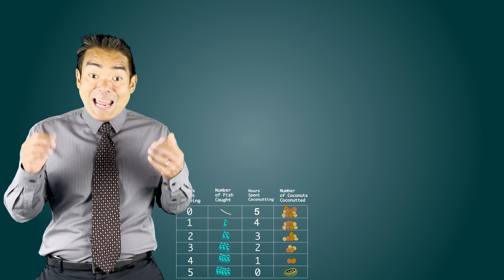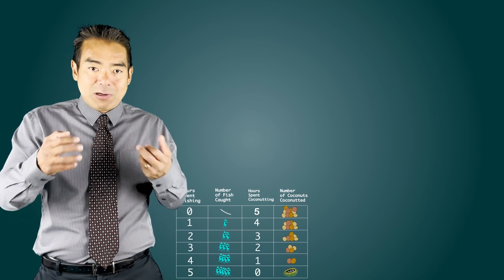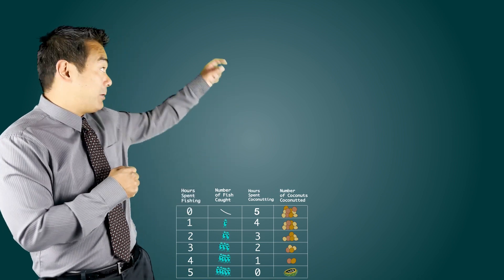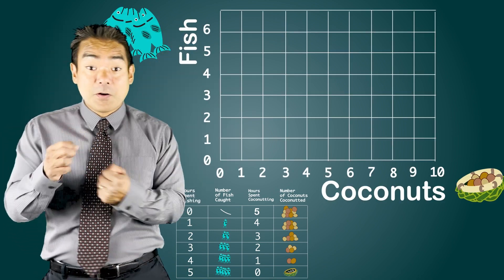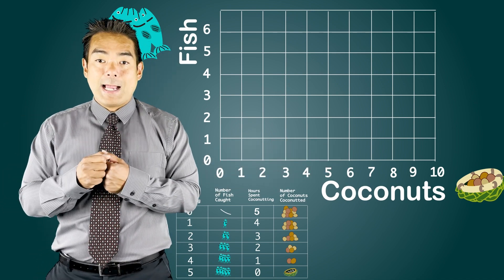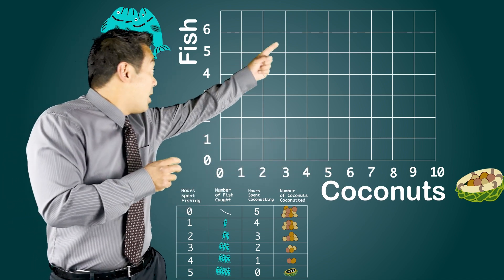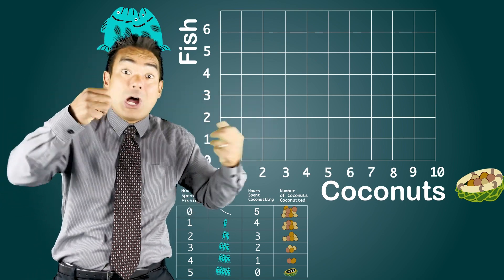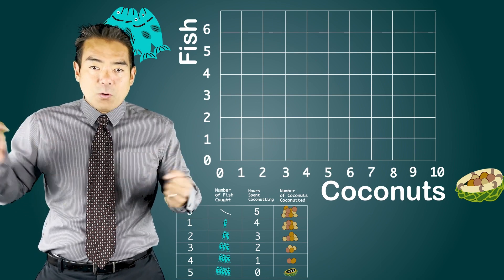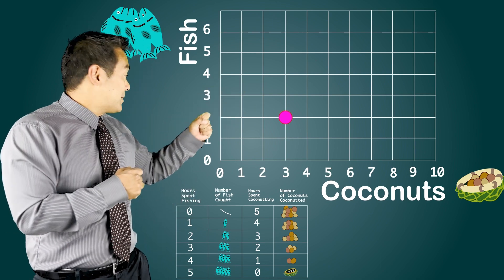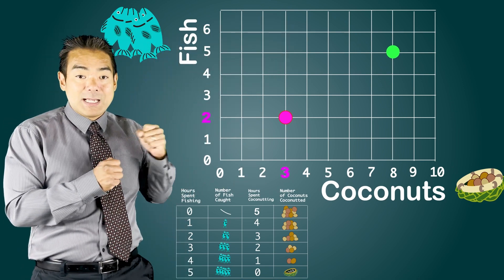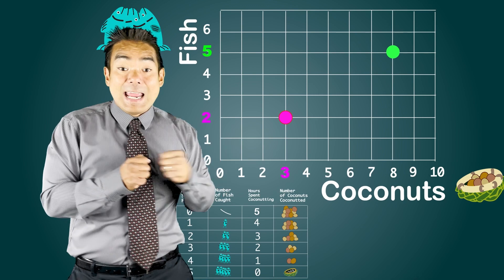In economics, we regularly use diagrams to represent data, and we can do exactly that with the PPC. We're going to create a diagram with fish on the vertical axis and coconuts on the horizontal axis. Any point we plot on this diagram represents some combination of fish and coconuts being produced. For example, this point represents two fish and three coconuts, and this point represents five fish and eight coconuts.